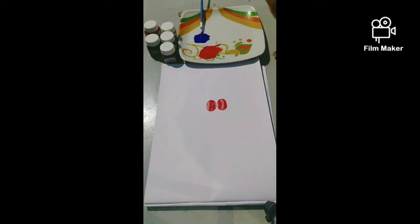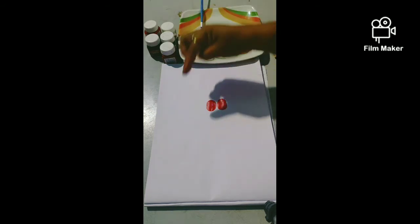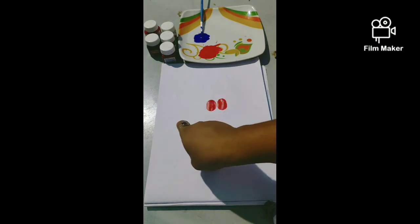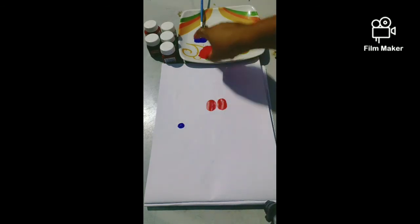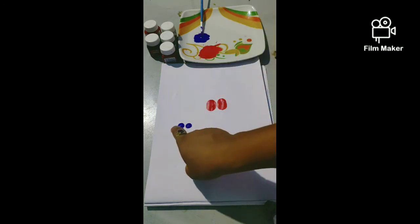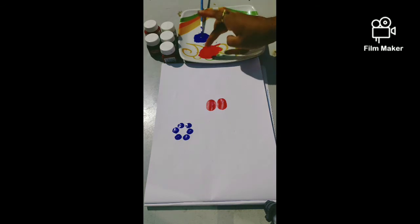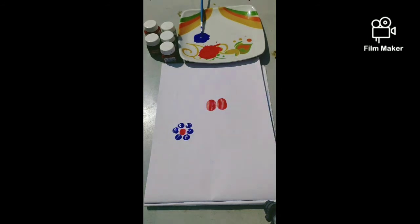You have to use your index finger and press here like this: one, two, three, four, five, six. Now use your middle finger and press in the middle side like this. It looks like a flower, isn't it?